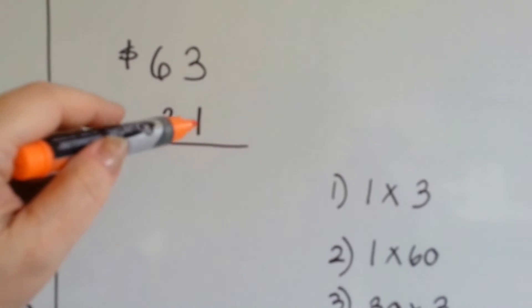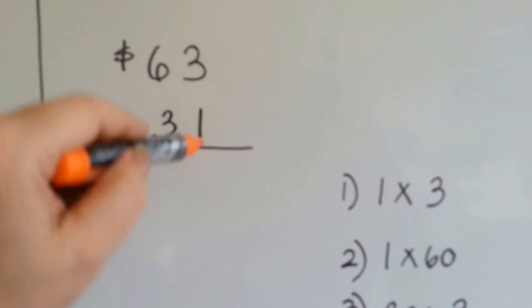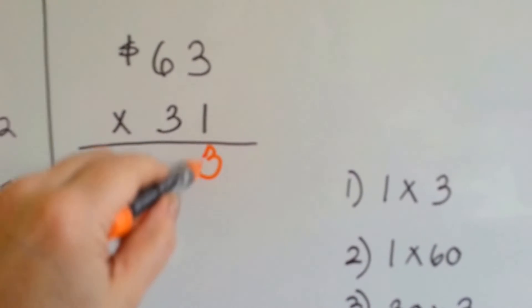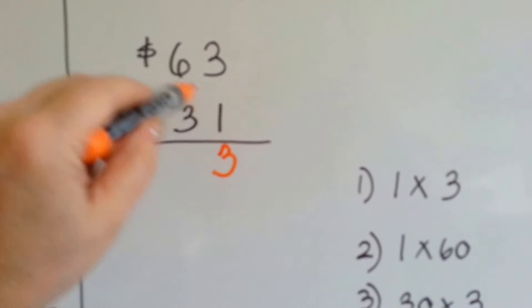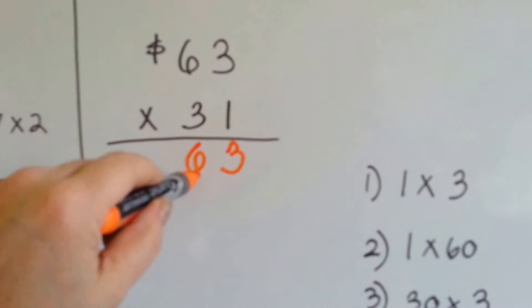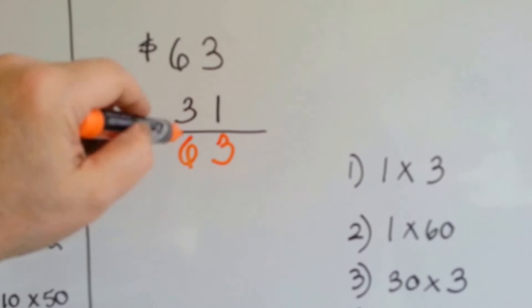So the first thing we do is we multiply 1 times 3, which is 3, and now we're going to multiply 1 times 6, which is 6.